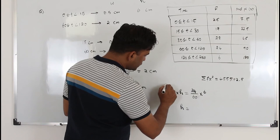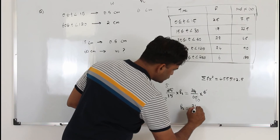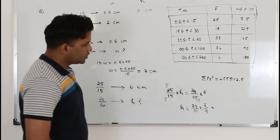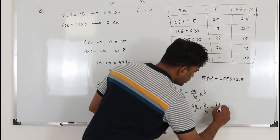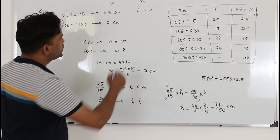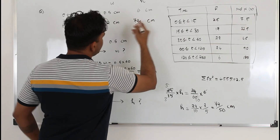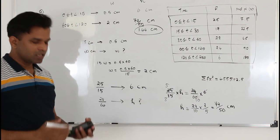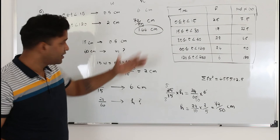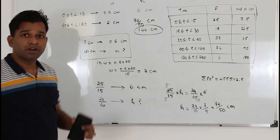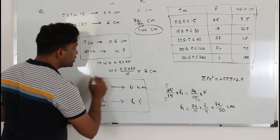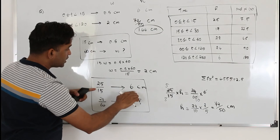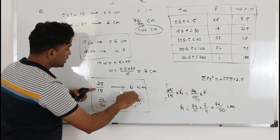Simplifying: 25 over 15 is 5 over 3, so H equals 24 over 60 times 6 times 3 over 5, which gives 72 over 50. So H equals 1.44 centimeters. This is the height of the bar. To summarize: for width, use the ratio of class intervals; for height, use frequency divided by class width, then apply the same scale factor used in the given bar.